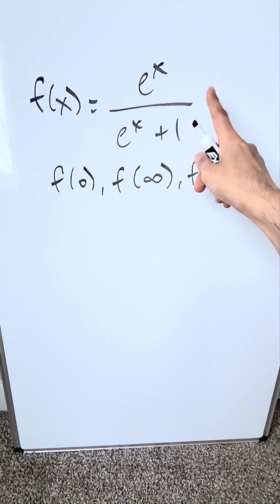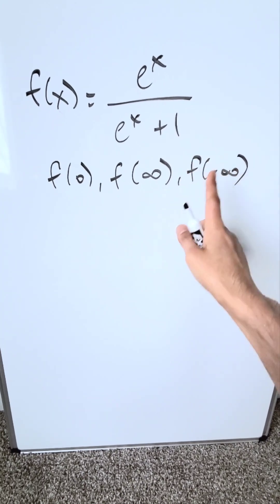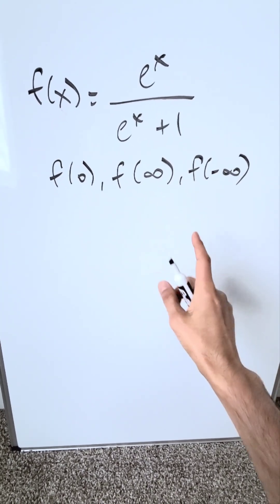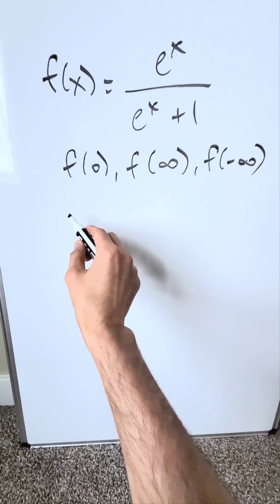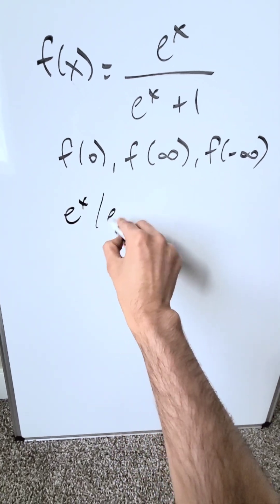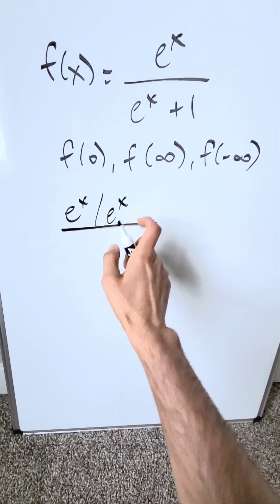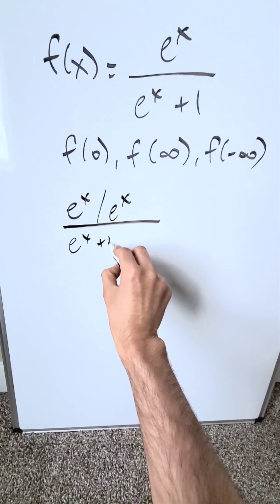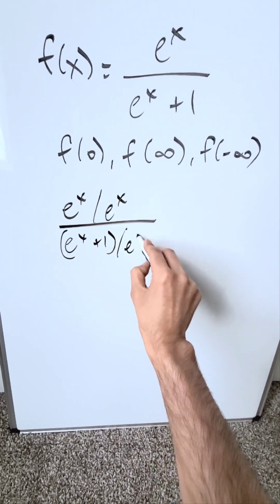How can we manipulate it? Take the numerator, take the denominator, individually divide them by the highest order variable exponent. What do I mean? e to the x divided by e to the x. That's my numerator. I divided it by e to the x. Take the denominator and do the same: e to the x plus 1 divided by e to the x.